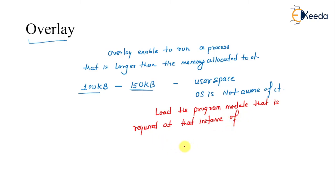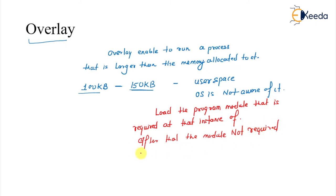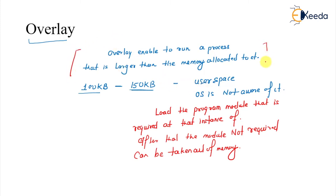After that, we can take out that module. The module that is not required can be taken out of the memory, and we load the next required module. This concept is called overlay — the main idea is to enable a process that is larger than the memory allocated to it.